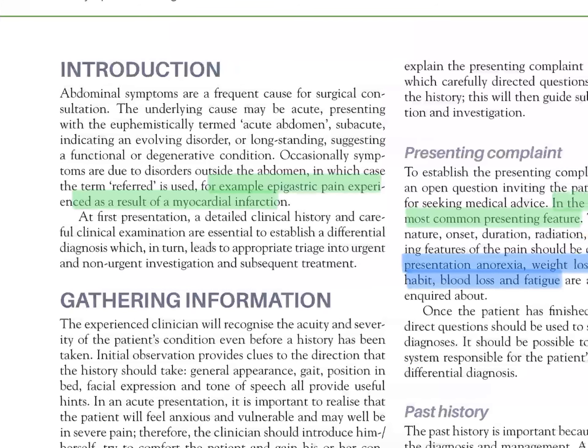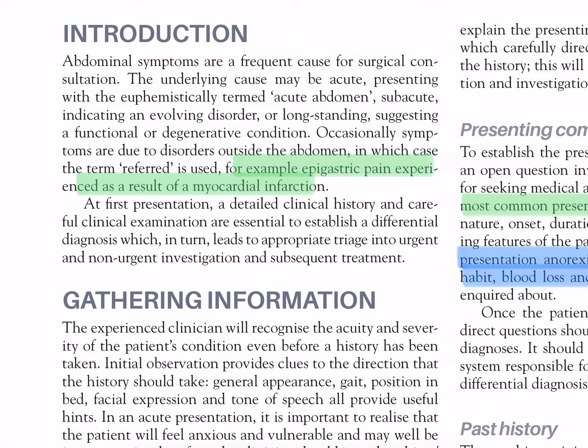The underlying cause may be acute, presenting with the euphemistically termed acute abdomen, subacute indicating an evolving disorder, or long-standing suggesting a functional or degenerative condition. Occasionally, symptoms are due to disorders outside the abdomen, in which case the term 'referred' is used — for example, epigastric pain experienced as a result of a myocardial infarction. At first presentation, a detailed clinical history and careful clinical examination are essential to establish a differential diagnosis, which in turn leads to appropriate triage into urgent and non-urgent investigation and subsequent treatment.